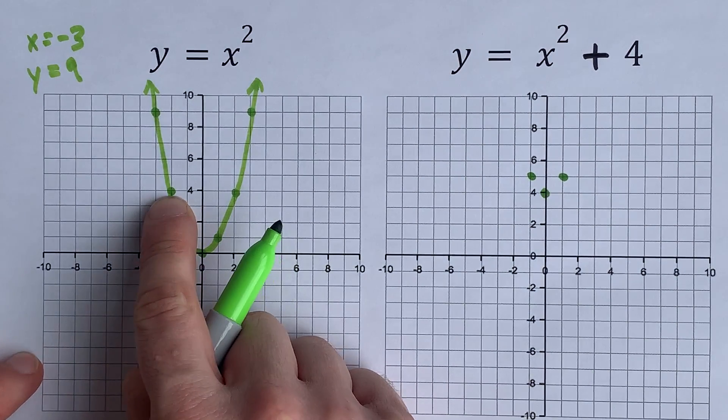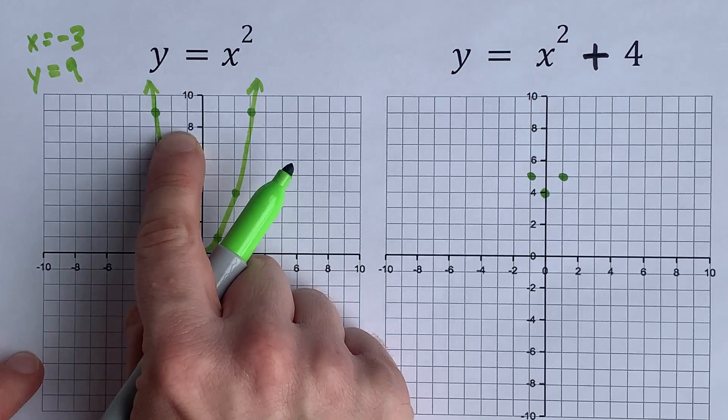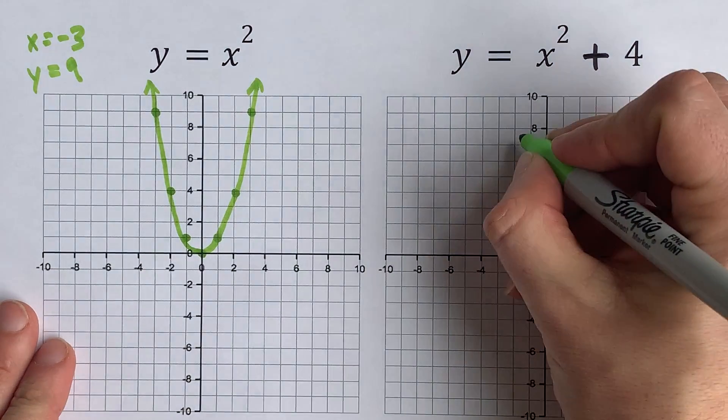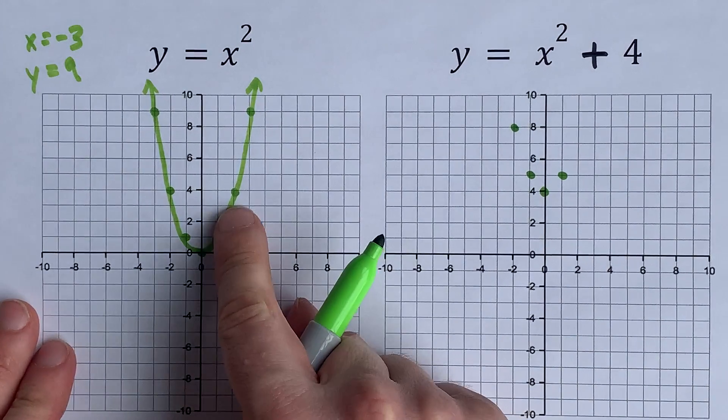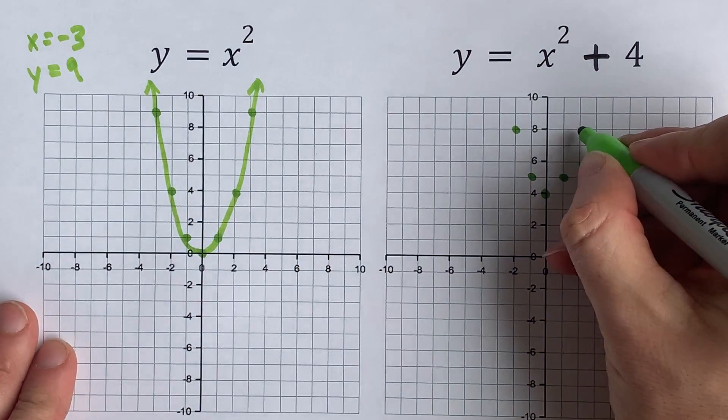This point at (-2, 4) needs to go 4 higher to 8, so there's a point at (-2, 8). This point, which was at the same height, also goes to 8.